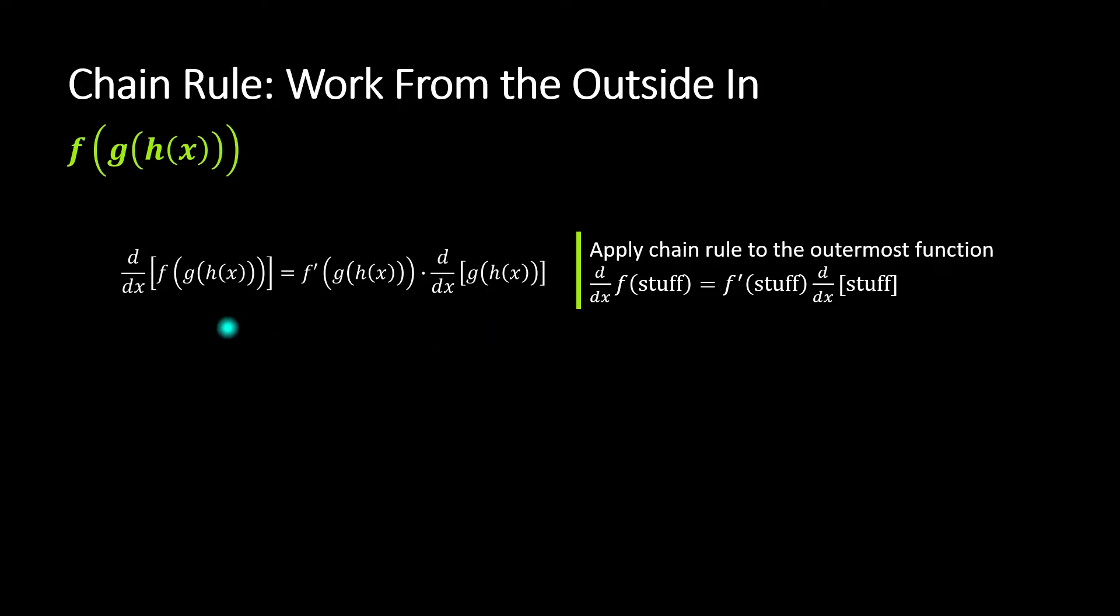We have this derivative of all of that mess, and the chain rule says: okay, if you're going to take a derivative of a bunch of stuff, then it starts with the outermost function - in this case f. You would take the derivative of that, leave everything else the same. So it's f'(g(h(x))), and then take the derivative of all of that inside stuff.